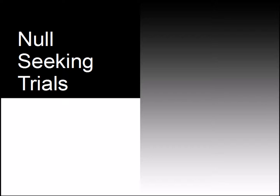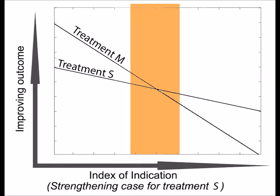We saw in the video on serial binary trials how conventional trials and negative feedback shift pre-trial zones of equipoise towards the point where two treatments are equivalent. Null-seeking trials are based on the idea of making this null-seeking effect, rather than a causal inference, the purpose of a trial. They are therefore designed to maximise convergence of equipoise on null, rather than to maximise the chance of a causal inference.